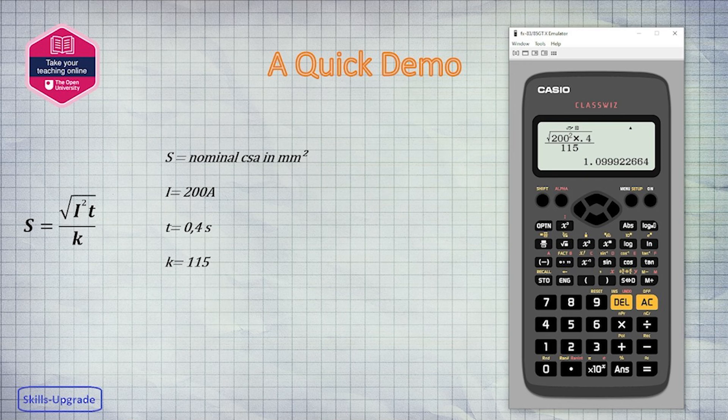So in this example we are looking for a CSA of greater than 1.09 mm squared.